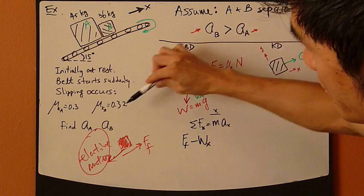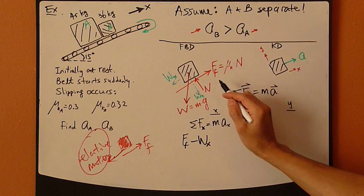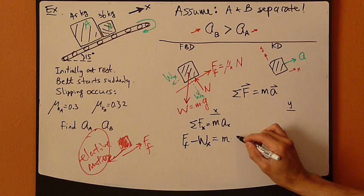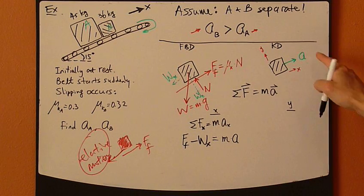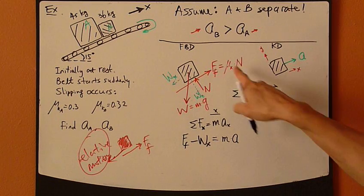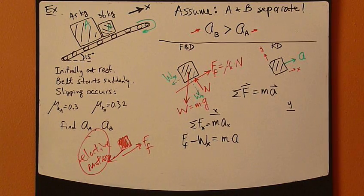So it's the negative of W_x, because W_x points downward in the negative X direction. And the dot, equals M A. Y direction. Again, look at this free body diagram.